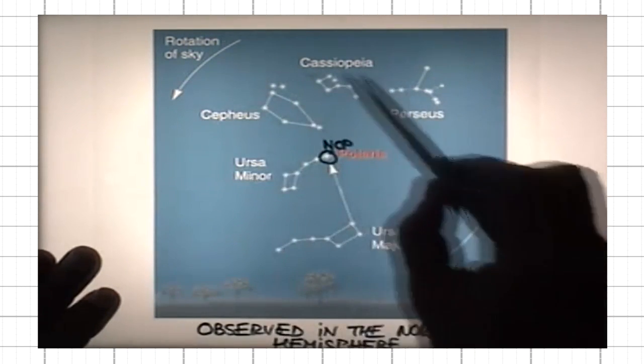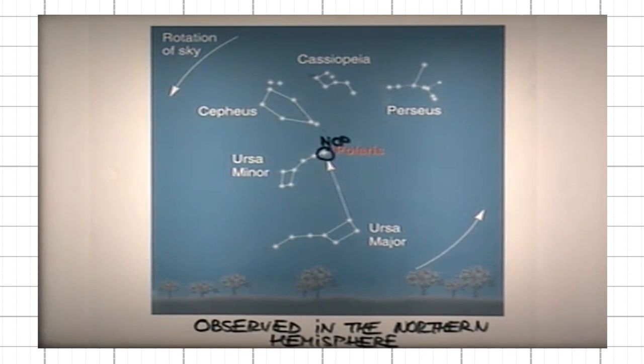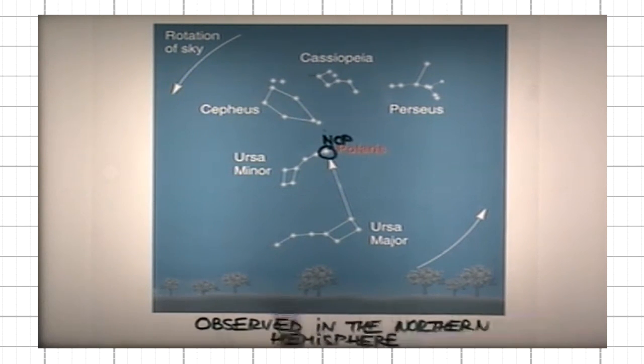All the stars that are part of these constellations or asterisms are close enough to the North Celestial Pole so that they are always visible. Such stars are called circumpolar stars. They never rise or set above or below the horizon.